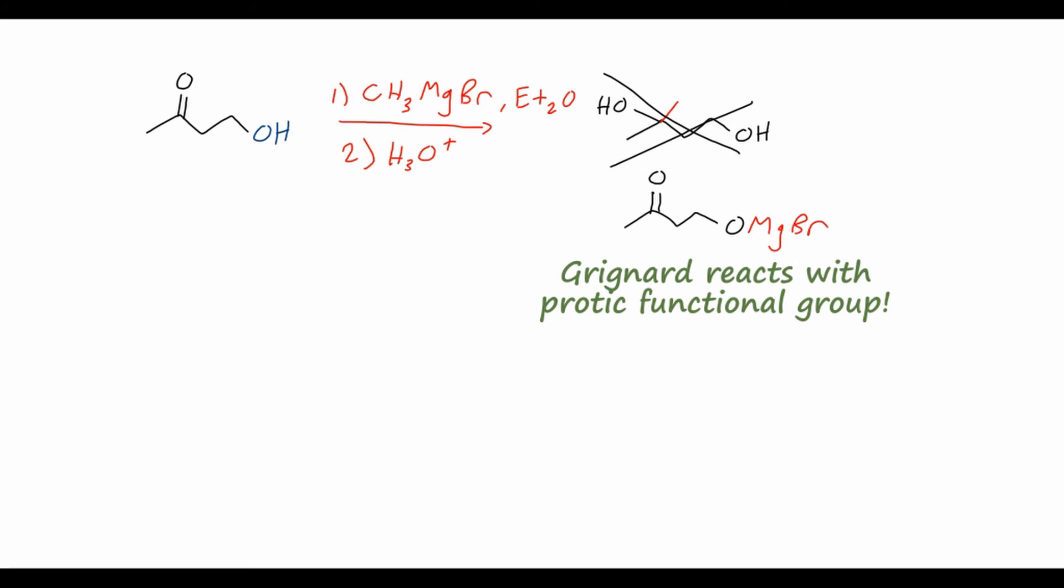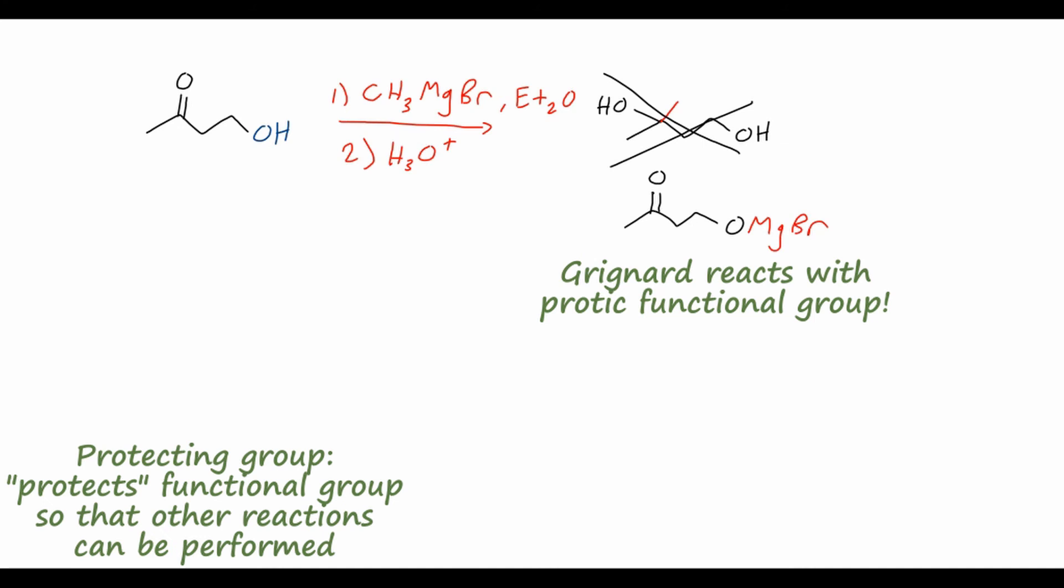And again, if you'd like some review on Grignard reagents or their reactions, please click on the video at the top of the screen here. So how can we add our methyl group without destroying the Grignard reagent and leaving our alcohol group untouched? Well, we can use what we call a protecting group in organic chemistry. The protecting group is some group that you can easily install onto a molecule to protect a certain functional group. Then you can perform your reaction that you want and then easily remove the protecting group at the end of the synthesis to expose the original molecule.